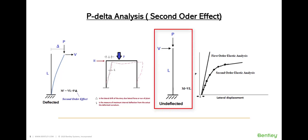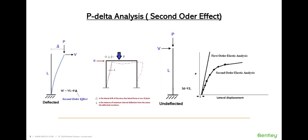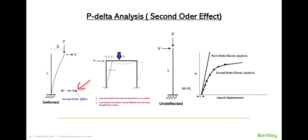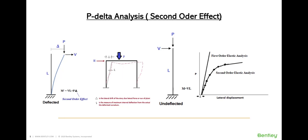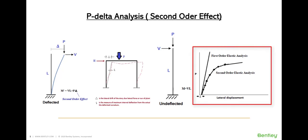Take the example of the cantilever column where vertical load P and horizontal load V are applied at the tip. In traditional first-order analysis, the moment at the base is M = V × L. But expanding the structural behavior: the lateral load V creates a displacement delta at the tip, and the vertical load P sitting there generates an additional moment of P × delta, inducing the second-order moment. So the total moment is now V×L + P×delta, which is higher than the first-order result. Similarly, internal out-of-straightness curvature in the member creates small delta, which further adds to the second-order effect. The responses — displacement, moment, shear — are all nonlinear.